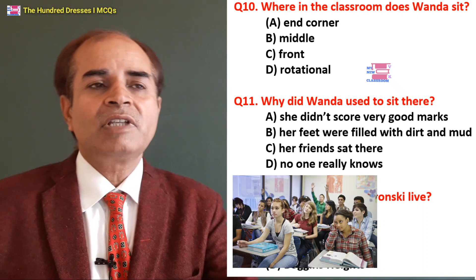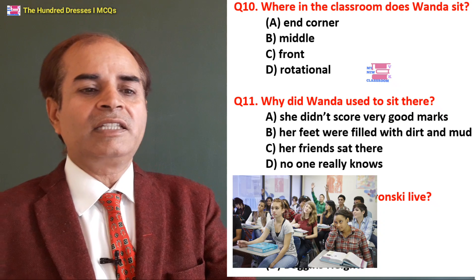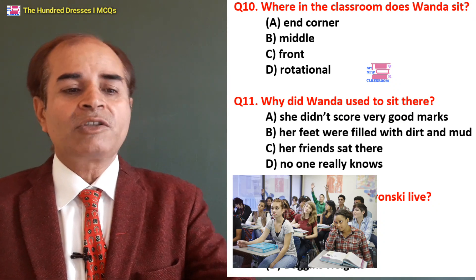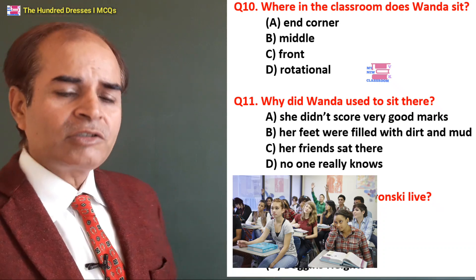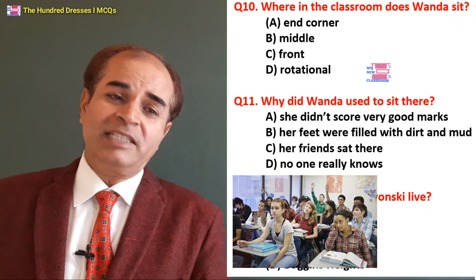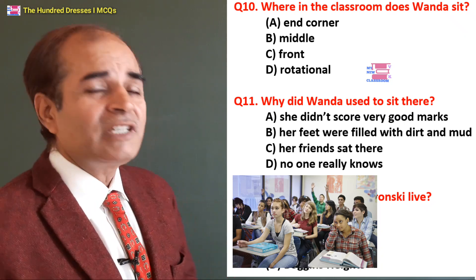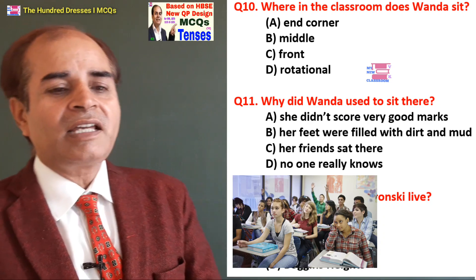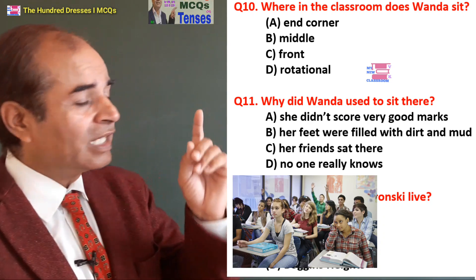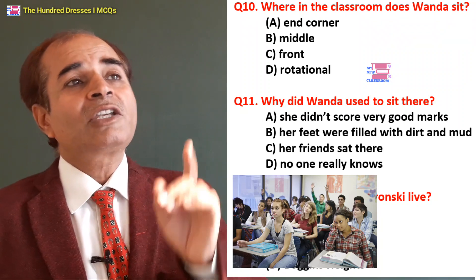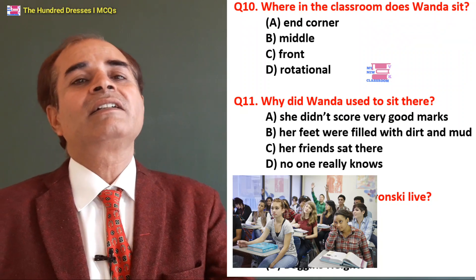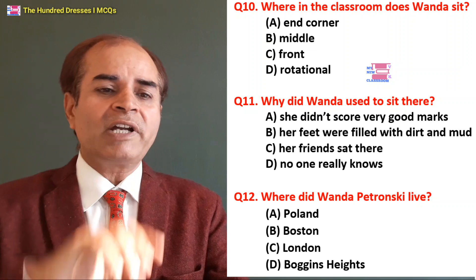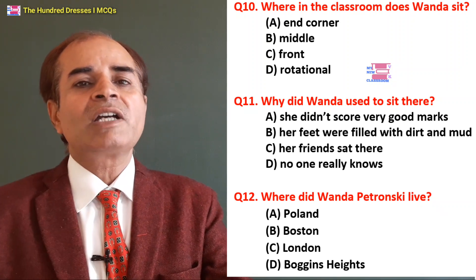Wanda used to sit in the last row, next to the last seat, among the rough boys. Eleventh question: Why did Wanda sit there? Because she did not score very good marks? Because her feet were filled with dirt? Because her friend sat there? Actually, no one really knows. The line from the lesson says no one knew why she sat there — she was quiet herself but sat among the noisy boys.